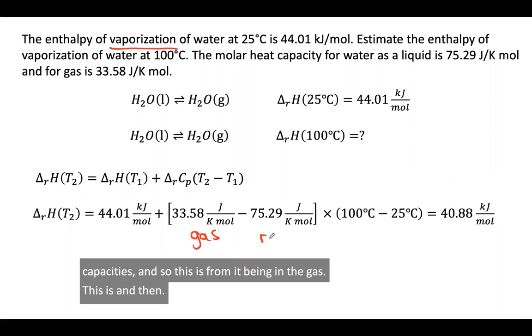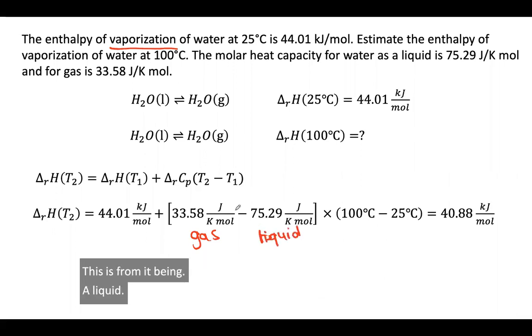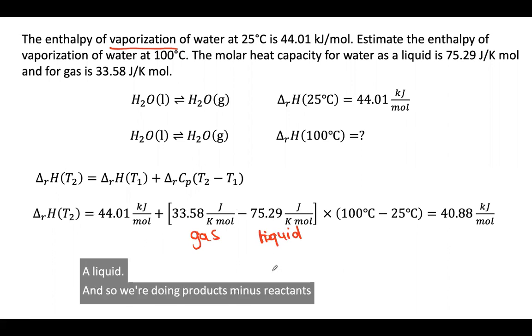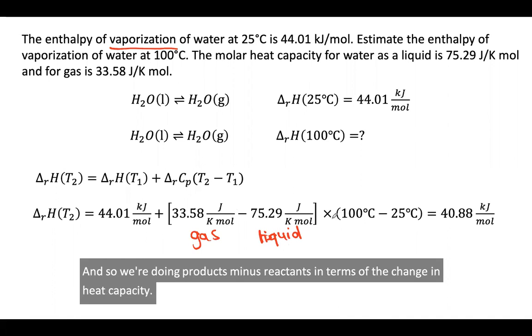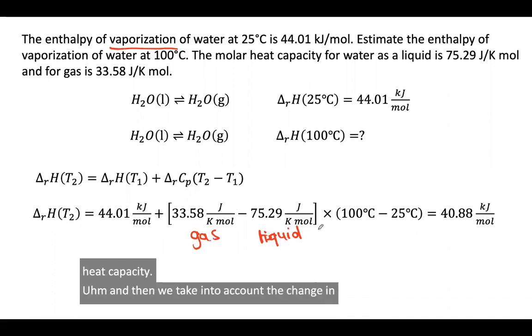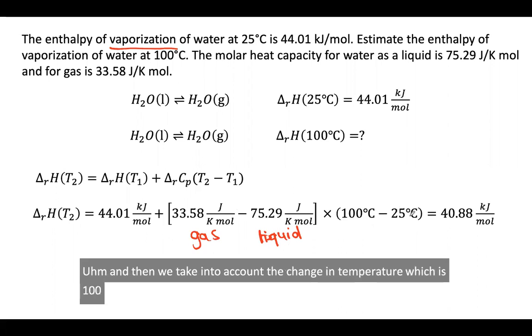We're doing products minus reactants in terms of the change in heat capacity. Then we take into account the change in temperature, which is 100 minus 25 degrees. We do all that math, and we see that at the new temperature it takes 40.88 kilojoules per mole in order to evaporate liquid water and make the gas form.